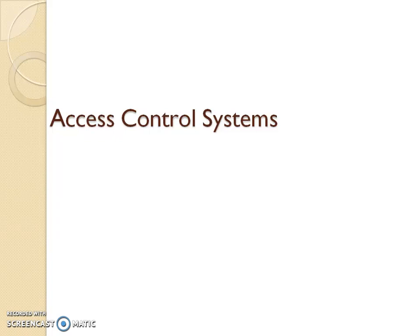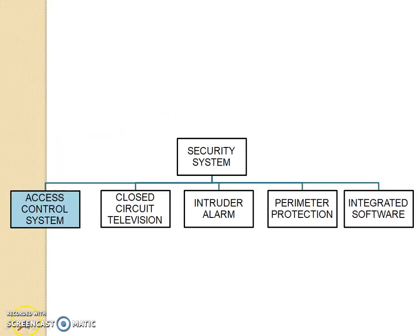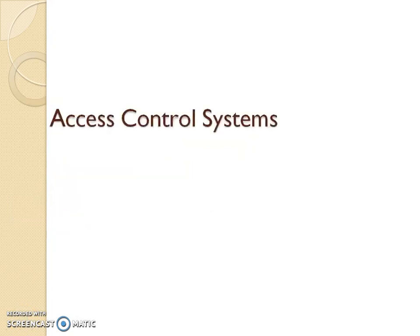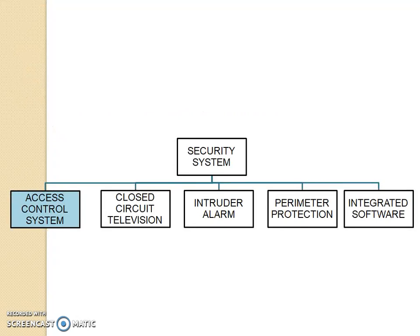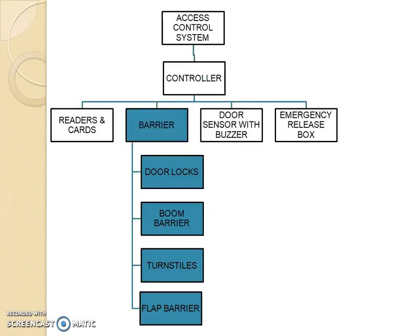Access control systems. Access control is part of the security system which primarily focuses on restricting the access of people or vehicles into a building. There are systems which are for monitoring, and there are systems which are for reporting unauthorized entry and exit of a building. The access control system primarily plays a vital role in restricting people into a premise.